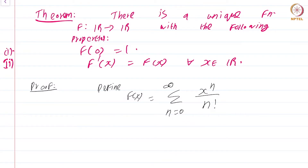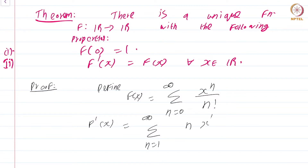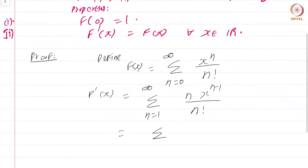If this series converges, what is its derivative? Let us first assume the series converges and compute its derivative. We know that if a power series converges, you can do term-by-term differentiation in the interval of convergence. So f'(x) = Σ(n=1 to ∞) n·xⁿ⁻¹/n!, which you can see is just Σ(n=0 to ∞) xⁿ/n!.